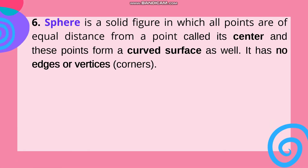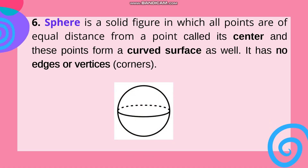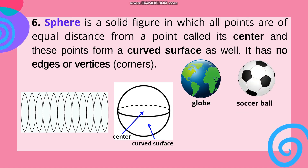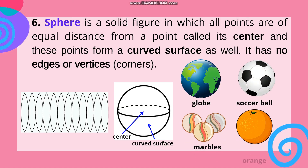Number six: Sphere. A sphere is a solid figure in which all points are of equal distance from a point called its center, and these points form a curved surface. It has no edges, vertices, or corners. Ang sphere ay kabilang sa non-polyhedron dahil ito ay may curved surface, at sa lahat ng solid figures, ang sphere lang ang walang edge at vertex. This figure of a sphere shows the center and curved surface. And this is the net of a sphere. Examples of sphere: globe, soccer ball, marbles, and orange.